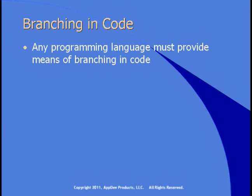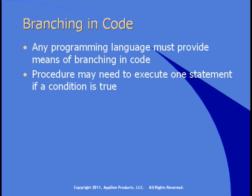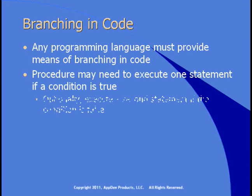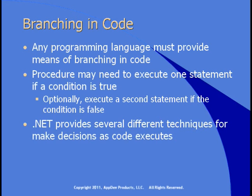Every programming language has to provide some ways of branching, making decisions in code as it runs. A procedure may need to execute one statement if the condition is true and perhaps execute a second statement if the condition is false. .NET provides several different techniques for making decisions as code executes, and we'll look at those in this chapter.